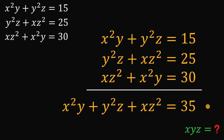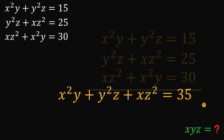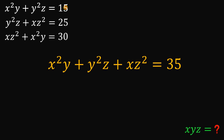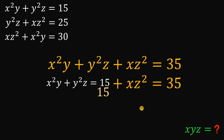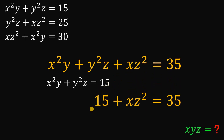Now, from here, let's focus on this result. Using the first equation, we know that x squared y plus y squared z equals 15. So substituting, the equation becomes 15 plus xz squared equals 35. Subtracting 15 from both sides, xz squared simply equals 20. Let's set aside this result.